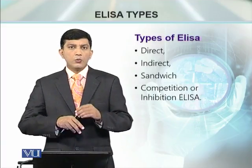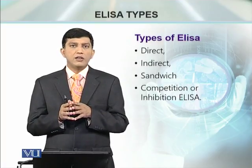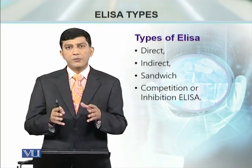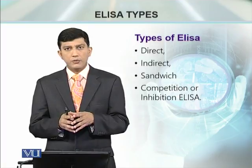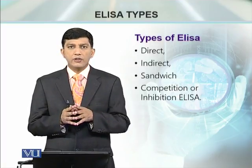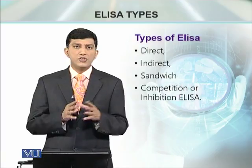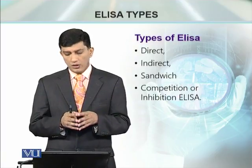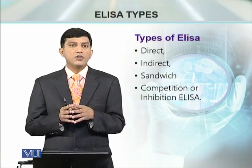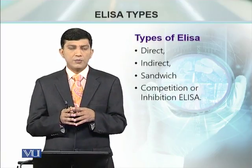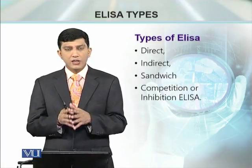When we think about the types of ELISA, we can categorize them broadly into four types: Direct ELISA, Indirect ELISA, Sandwich, and Competition or Inhibition ELISA. Now let's see what the difference is.